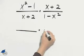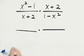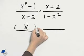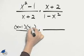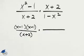So in the first fraction, we have the difference of two squares on the top. x squared minus 1 factors into x minus 1, x plus 1. The denominator, x plus 2, is already factored.